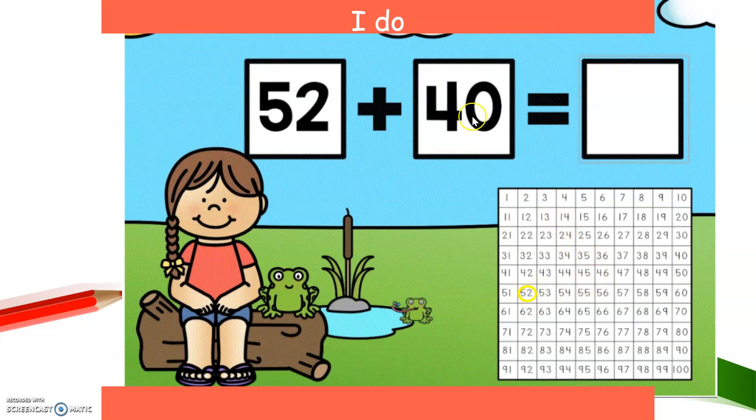I'm going to mark it and then it says plus 40. That means this is four tens. So I had to go down four times. I had to add four groups of 10. So there's one, two, three, and four. So 52 plus 40 is 92.